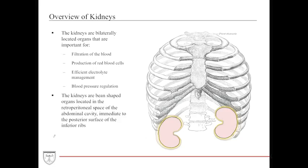The kidneys are bilaterally located organs important for a number of different functions. They're important for overall filtration of the blood, as they receive about one-fourth the cardiac output from the heart. The kidneys also help with the production of red blood cells — they secrete erythropoietin or EPO from the peritubular capillaries, which then goes to the bone marrow and helps stimulate RBC production.